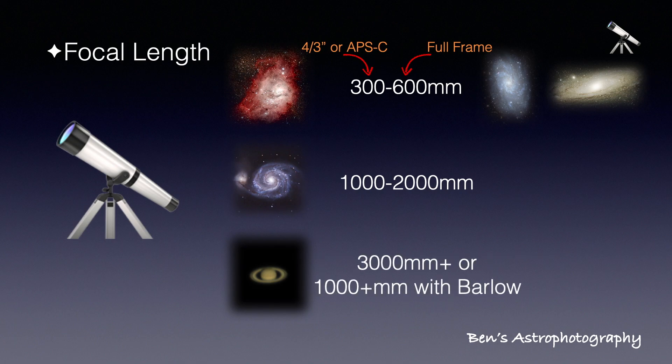If you are dedicated to planets and planetary nebulae, a focal length of over 3000mm is essential. But since the target is small and bright, you can probably use a Barlow lens to achieve that. But still, you need at least 1000mm to start with.